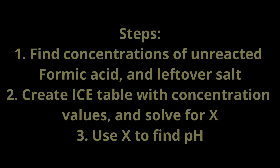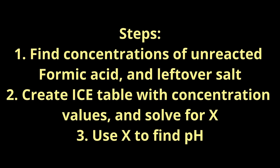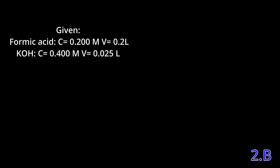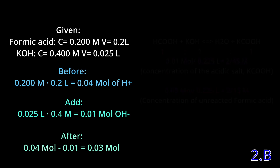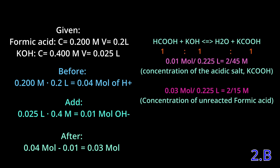Because this is a weak acid strong base question, it's really different from the first one and there are many more steps. First, we find the concentration of the unreacted formic acid and the leftover salt; we create an ICE table with concentration values and solve for x; then we use that x value to find the pH. We're given the concentration of formic acid and its volume, plus the concentration of the strong base and its volume of 0.025 liters. We find the moles of the formic acid by multiplying concentration by volume, getting 0.04 moles. Then we find the moles of hydroxide and subtract, getting 0.03 moles of hydronium — which is actually 0.03 moles of unreacted formic acid — left over.